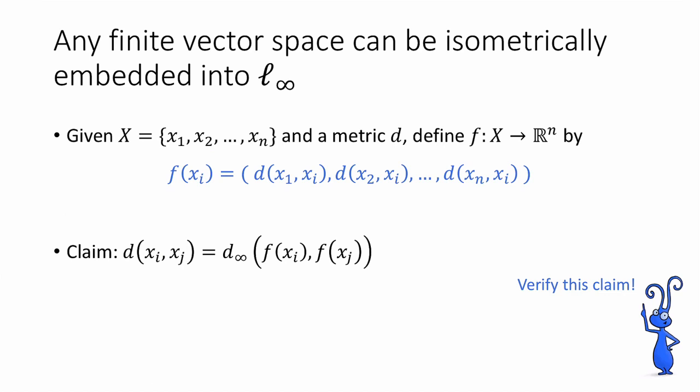That is, I claim that for any i and j, the distance d(xᵢ, xⱼ) is the same as the L∞ distance between f(xᵢ) and f(xⱼ). It's a good exercise to verify this claim. Actually, similar reasoning is going to come up later when we talk about Bourgain's embedding, so it's a good idea to pause the video and verify this now.